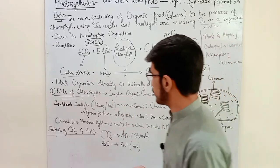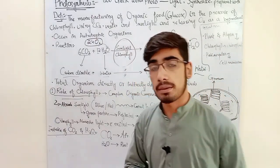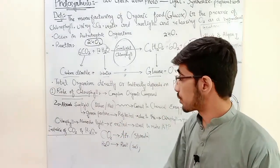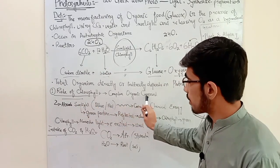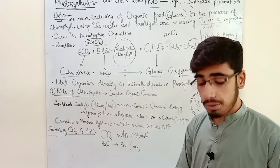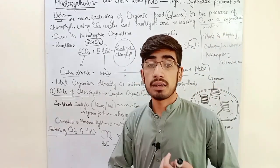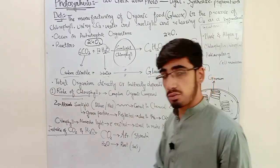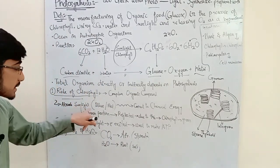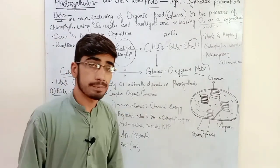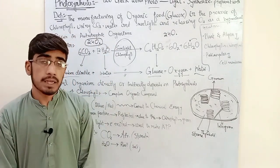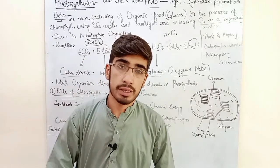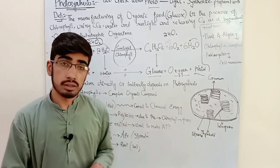The role of chlorophyll in photosynthesis: chlorophyll is a complex organic compound. Organic compounds contain carbon and hydrogen. Chlorophyll absorbs sunlight — mostly blue or red light — and converts it to chemical energy. This causes electron excitation.